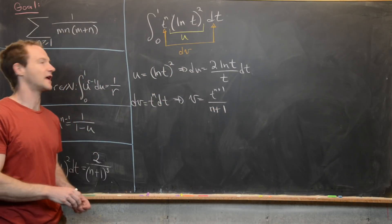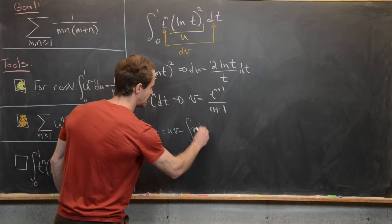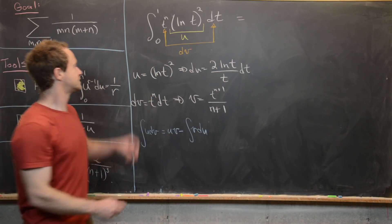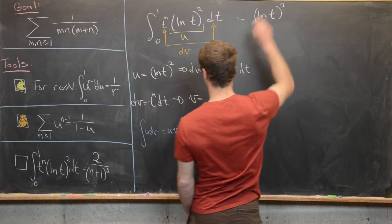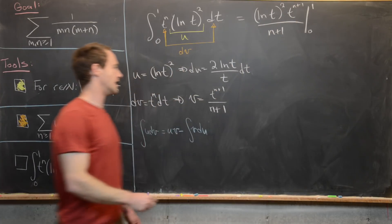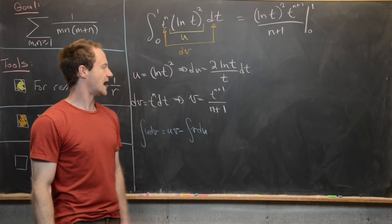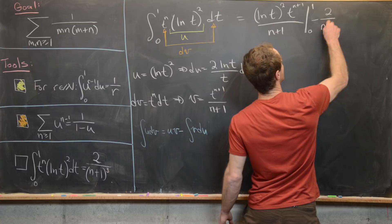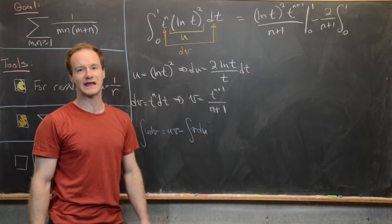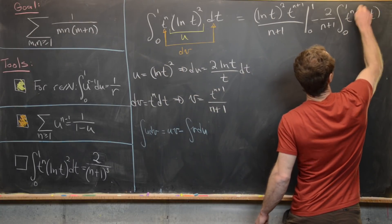Recalling the integration by parts formula — integral of u dv equals u times v minus the integral of v du — we get u times v, which is the natural log of t quantity squared times t to the n plus 1 over n plus 1, evaluated from 0 to 1. Then minus v du: we pull out constants 2 and 1 over n plus 1, giving minus 2 over n plus 1 times the integral from 0 to 1 of t to the n times the natural log of t dt.